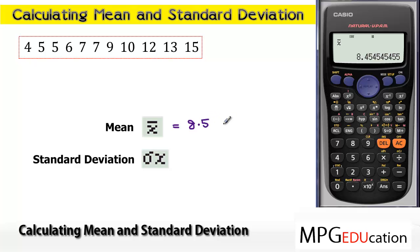And the standard deviation, we get that by hitting Shift, 1, 4, 3, and equals. And you'll notice the standard deviation, we'll round that again to one decimal place, is 3.5.